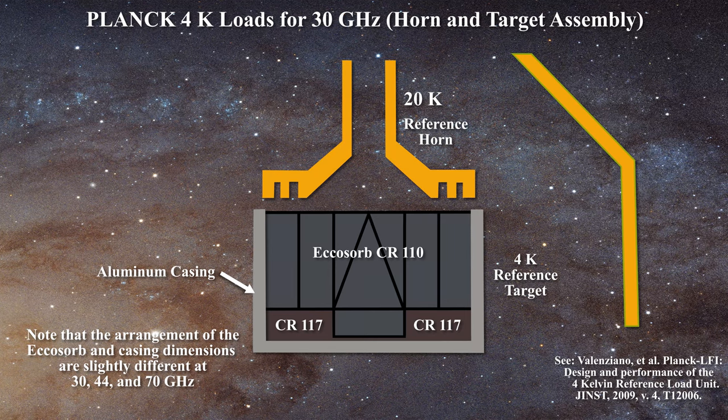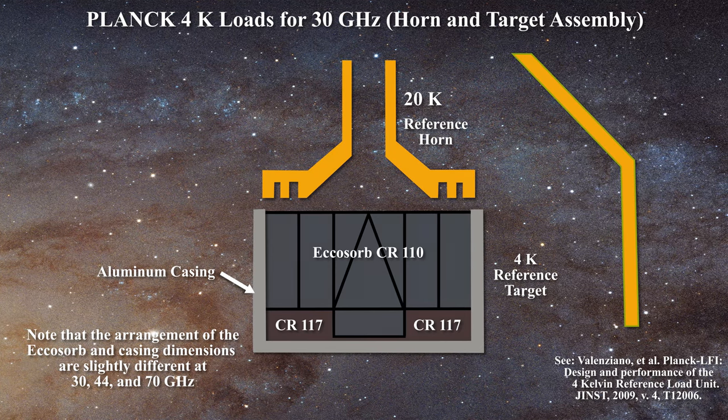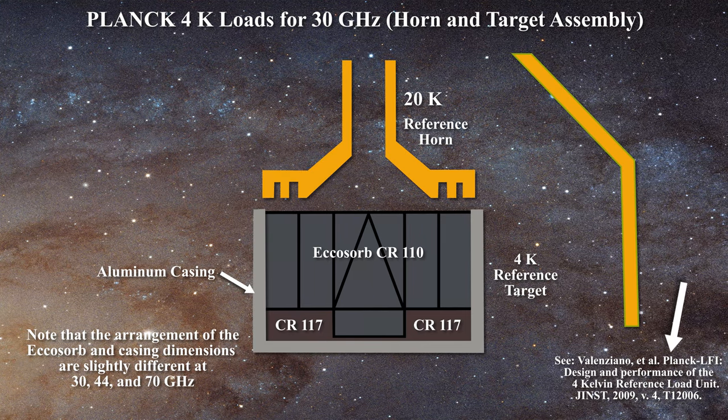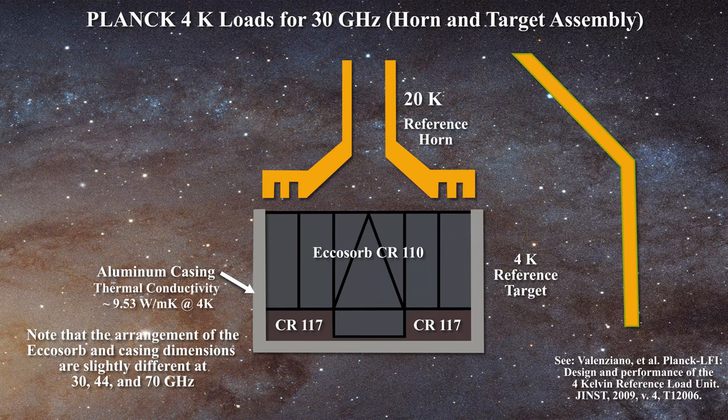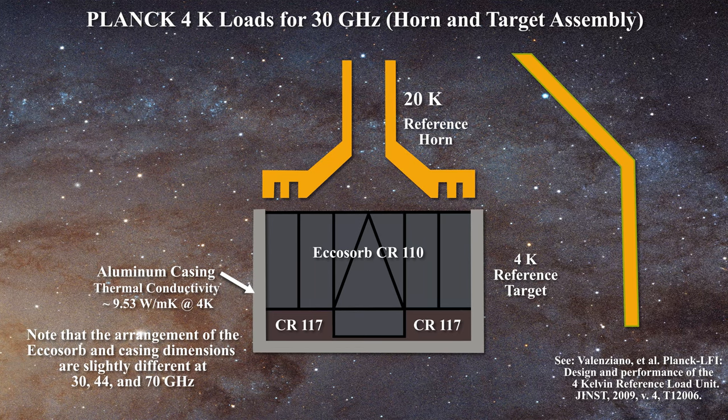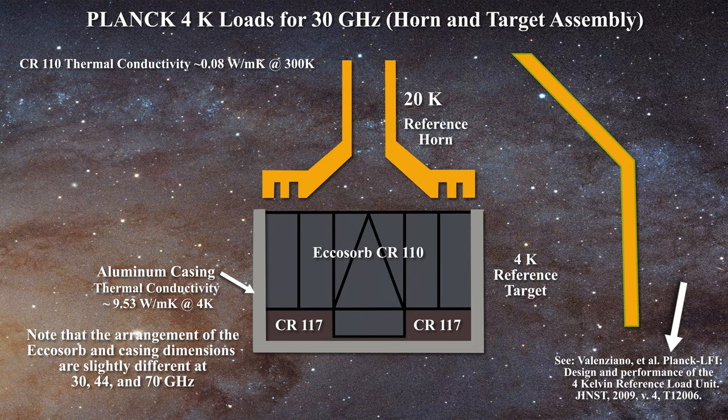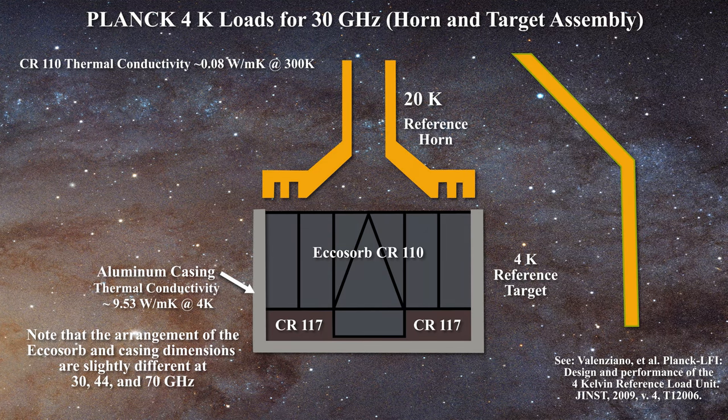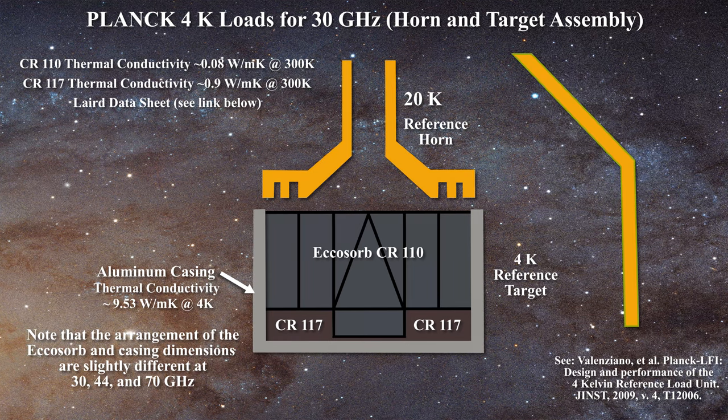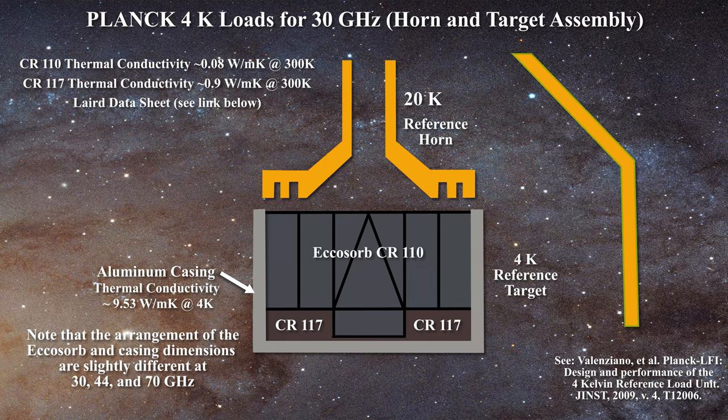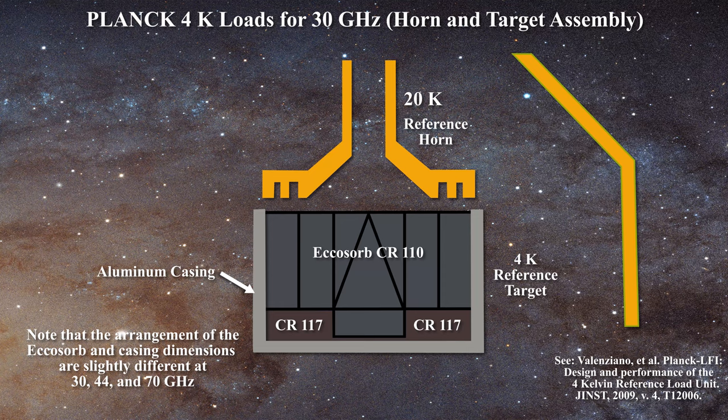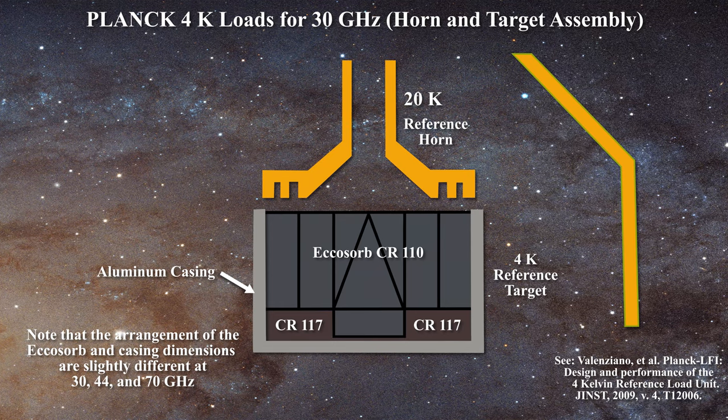However, beyond its good attenuation, CR117 has another feature. It has a rather non-negligible thermal conductivity. For instance, as one can learn in this paper, aluminum has a thermal conductivity of 9.53 at 4 Kelvin. The thermal conductivity of CR110 is 100 times lower with a value of 0.08 at 300 Kelvin. However, CR117 has a thermal conductivity of roughly 0.9 at 300 Kelvin. As such, remember that though CR117 is a rather good absorber, it has a non-negligible thermal conductance, and this is important to keep in mind. In order to contain the reference target material, the Planck satellite uses casings.